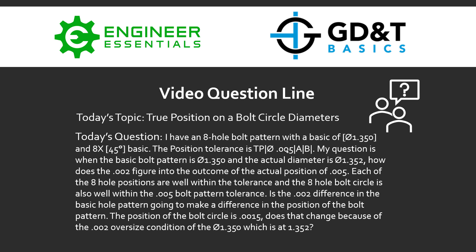Each of the eight hole positions are well within tolerance and the eight-hole bolt circle is also well within the 5 thousandths bolt pattern tolerance. Is the 2 thousandths difference in the basic hole pattern going to make a difference in the position of the bolt pattern itself? The position of the bolt pattern circle is 0.0015 — does that change because of the 0.002 oversized condition of the 1.350 which is actually 1.352?